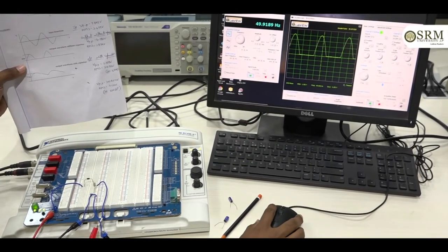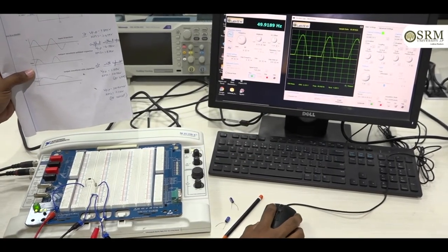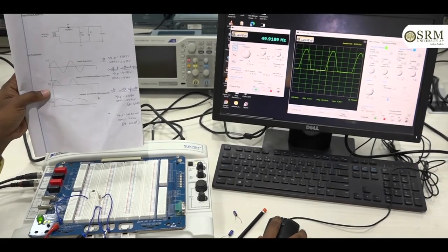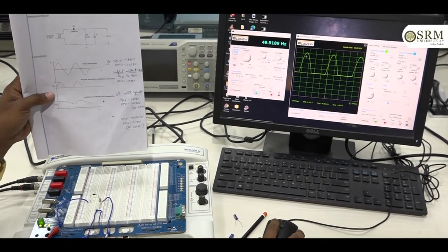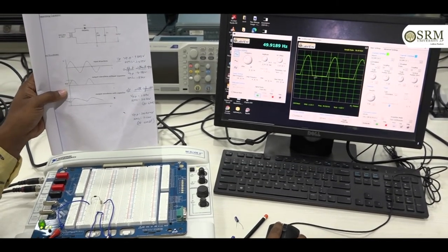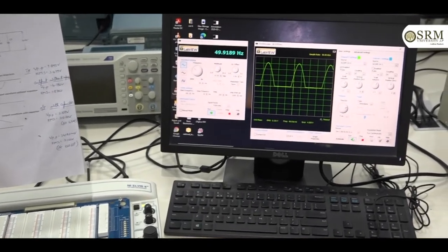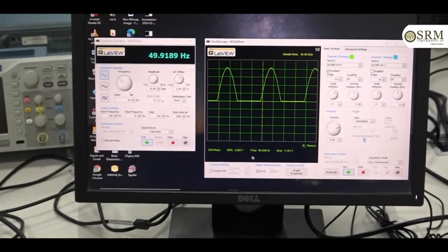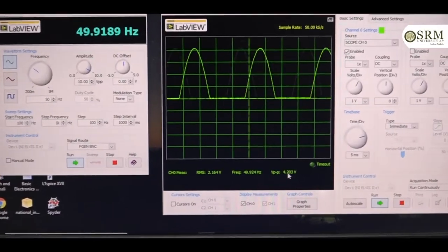For positive half cycle, the diode is on. For the negative half cycle, diode is off. This is the output of half wave rectifier without capacitor. From this, we can calculate RMS value frequency and peak to peak voltage.